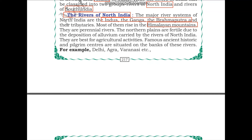The Indus, Ganga, and Brahmaputra are perennial rivers. Perennial means something that is present throughout the year, so perennial rivers flow throughout the year without going completely dry during any season. The northern plains are fertile due to the deposition of alluvium carried by the rivers of North India — we have covered this in our previous video on the Northern Plains, and a link will be provided in the description box.